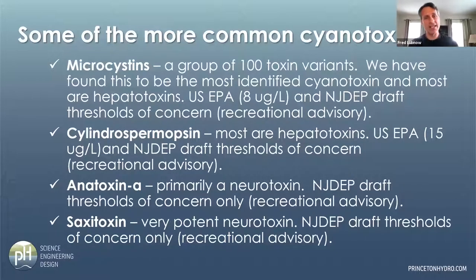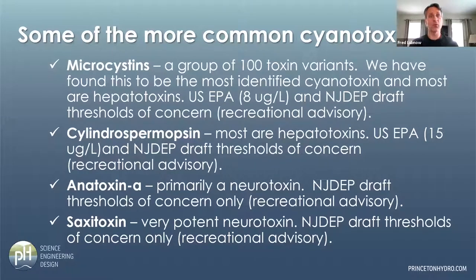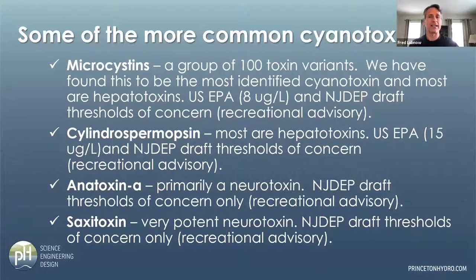Some of the more common cyanotoxins — and New Jersey recognizes four of them. The first is a group called microcystins — about 100 different toxin variants. They tend to be the most common cyanotoxin found in the mid-Atlantic. If we get a hit on anything, it's usually microcystins. The EPA threshold for recreational activity is 8 micrograms per liter, and I'll show you the New Jersey thresholds in a bit.